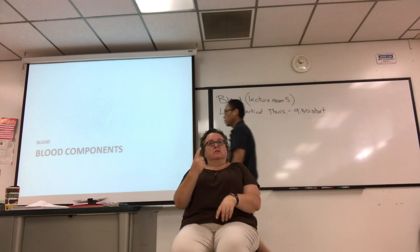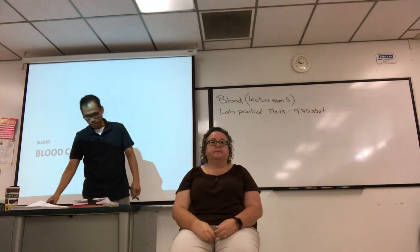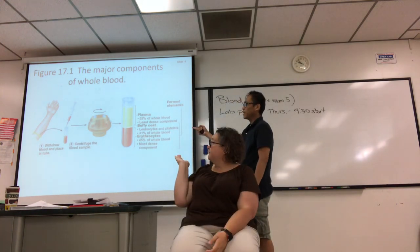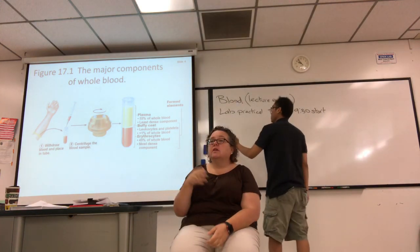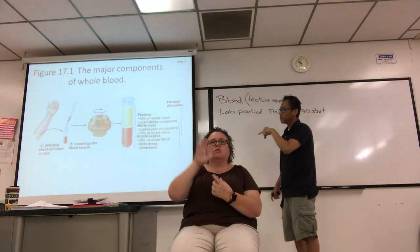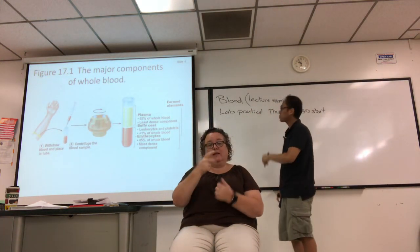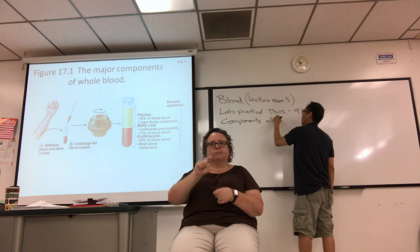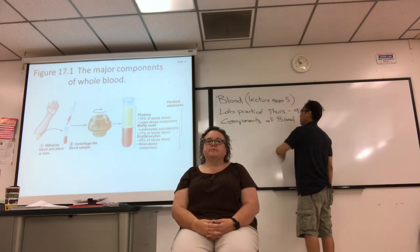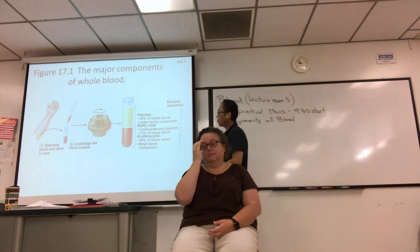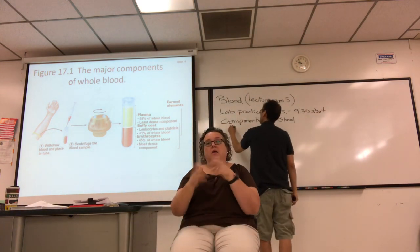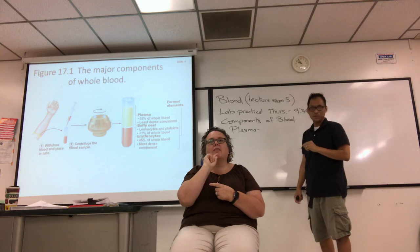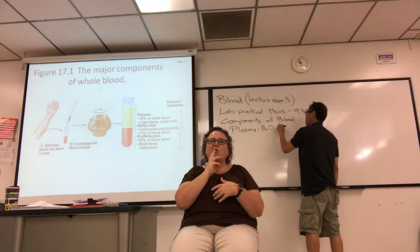Right now I'll lecture on blood and its components. The first picture shows you basically spinning down blood using a centrifuge. When you fractionate blood, you can see the different components in that test tube. So blood is a little more than half plasma. Plasma is the fluid part of blood — basically water with some solutes in it.